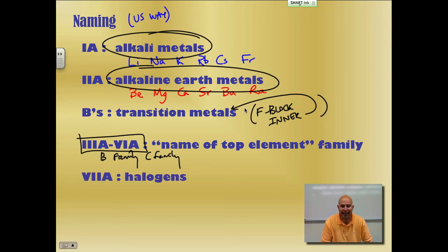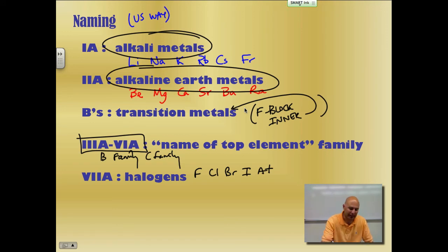And I shouldn't say lastly, 7A, halogens. The halogens are fluorine, chlorine, bromine, iodine or iodine, and astatine. So those are your halogens. And lastly,